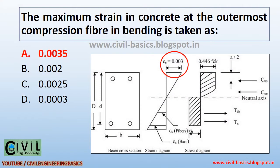The maximum strain in concrete at the outermost compression fibre in bending is taken as 0.0035. You can easily see this in the strain diagram.